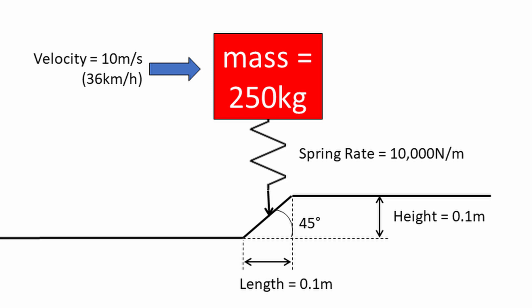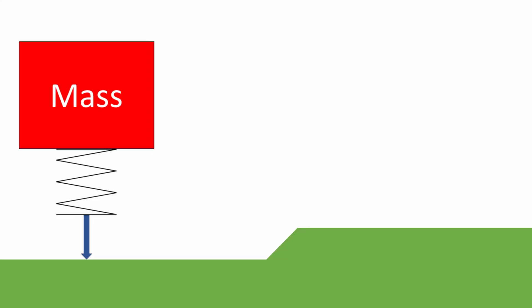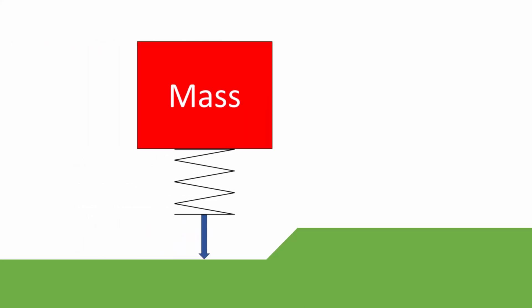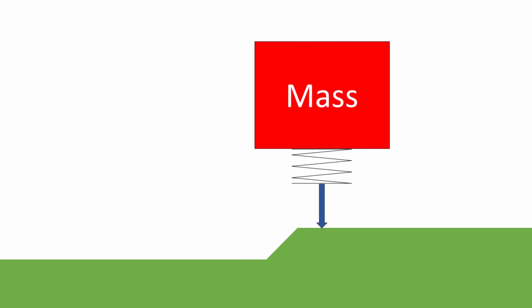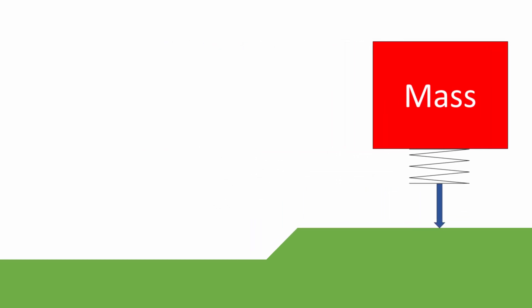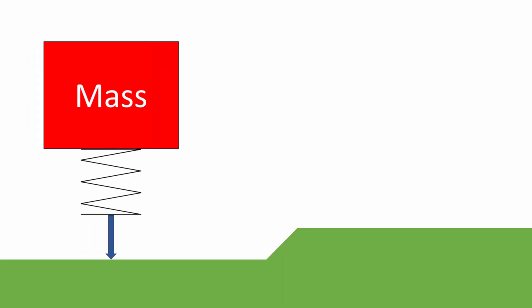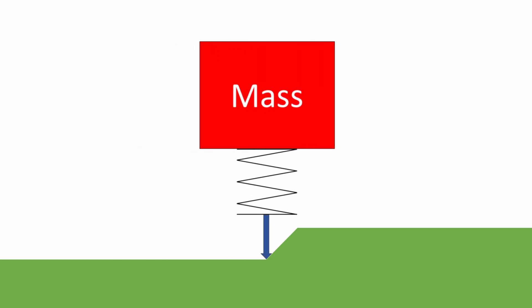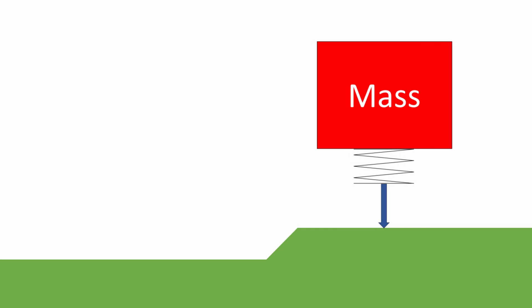So when the body reaches the ramp, what do Hooke and Newton say will happen? Newton's first law says the body is moving horizontally but not vertically, so it's not going to move vertically unless a force acts upon it. Newton's second law says that the force acting on the body is proportionate to its mass and acceleration. When the spring reaches the ramp, it will have to apply a force to the mass to lift it up, which means the spring's length will shorten, and the force it generates will be proportionate to how much its length changes.